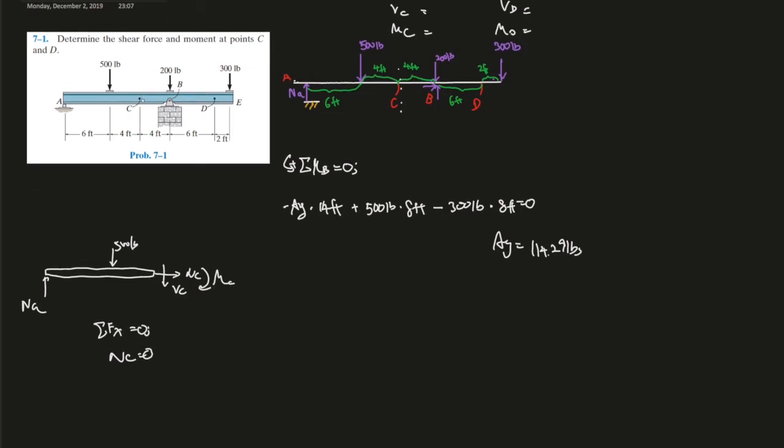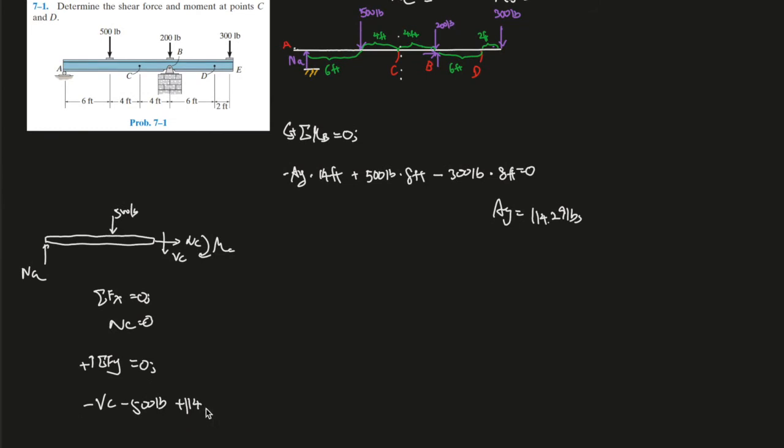Using the sum of the forces in the Y direction, going up is positive, equals zero. This way VC is minus 500 pounds plus A, 114.3 pounds.